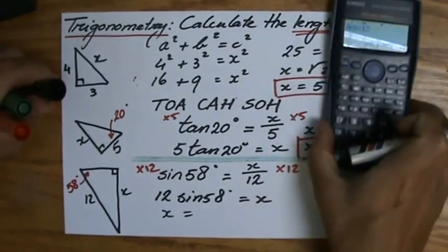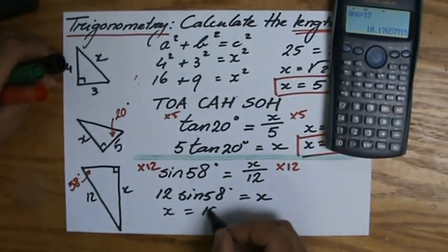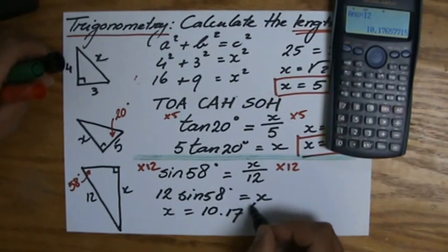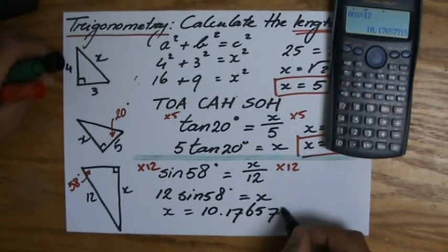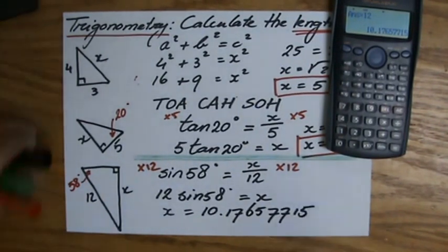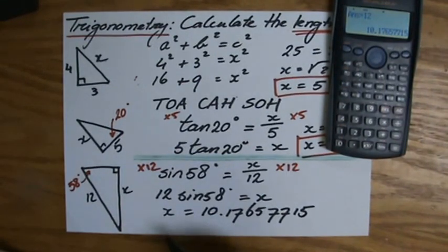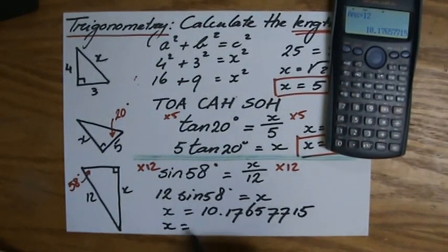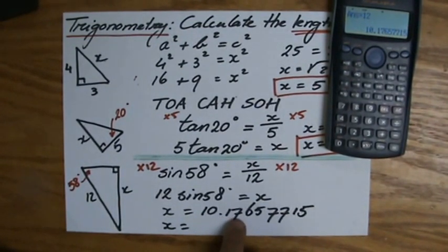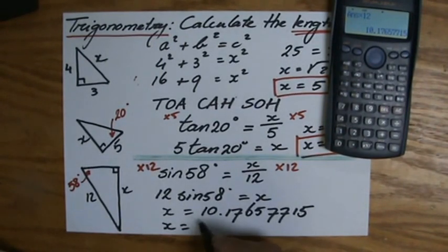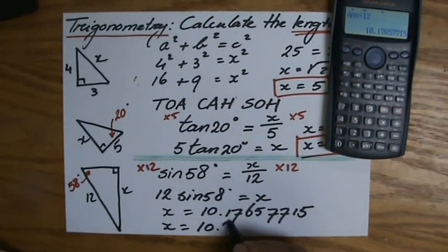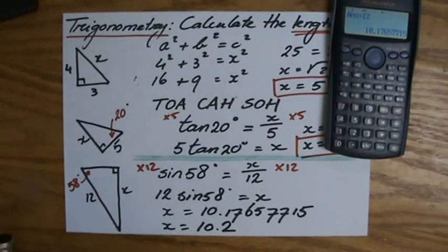And then, it tells me, and I'll write them all down, 10.17657715. Now, three significant figures. One, two, three, a one. Does it stay a one? Does it go up to a two? That depends on the next one. It's a five or higher. So, yes, it goes to a two. Ten point two.